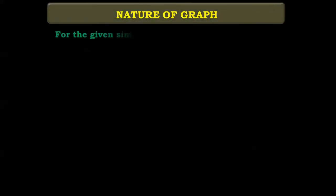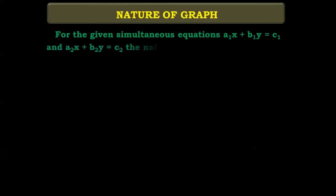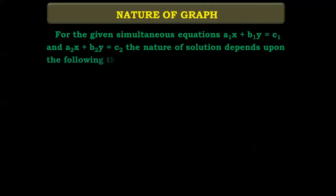Now we will start with the nature of the graph for the simultaneous linear equation. For the given simultaneous equations a1x + b1y = c1 and a2x + b2y = c2, the nature of the solution depends upon the following three conditions.